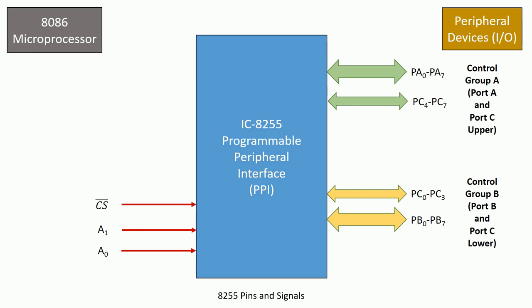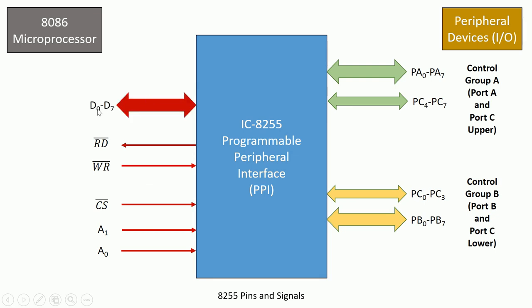Apart from A1 and A0, the signals coming from the 8086 microprocessor include Read bar and Write bar. If the microprocessor needs to read data from an input device it will use the Read bar signal (active low), and if it wants to write data to an output device it will use the Write bar signal. The data lines D0 to D7 are bi-directional, used to either send or receive data depending on whether connected to an input or output device.